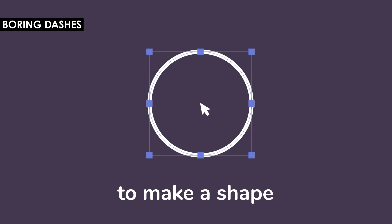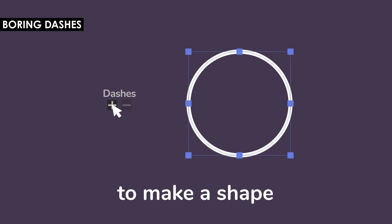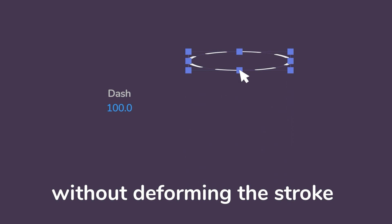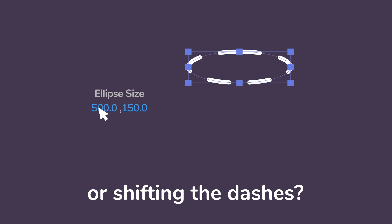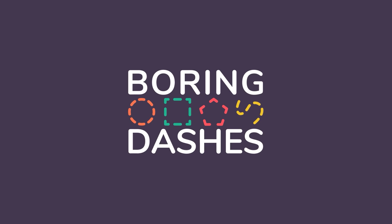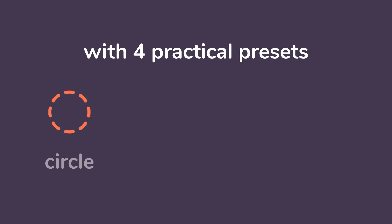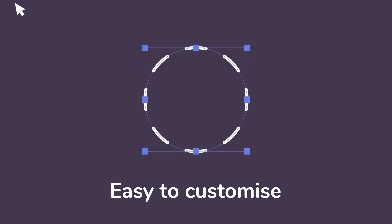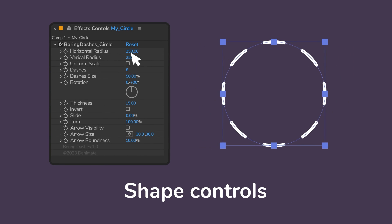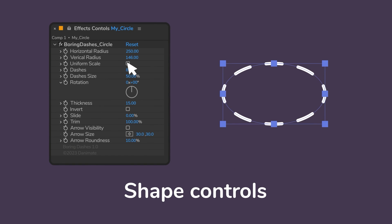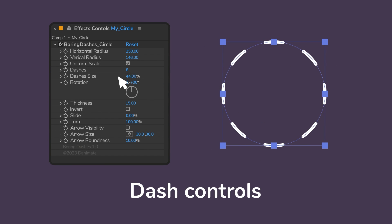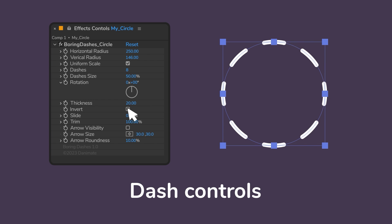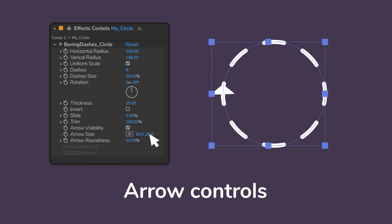Boring Dashes simplifies the creation and animation of dash strokes in Adobe After Effects. If you're tired of those issues where you have sliding dashes and the number of dashes changes as you adjust your paths, this script provides a hassle-free solution ensuring consistent and smooth motion graphics. It has all the parameters to control your effect in one simple panel, making the whole process super easy.